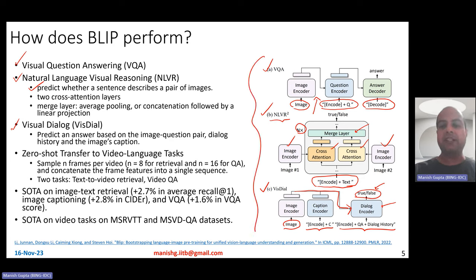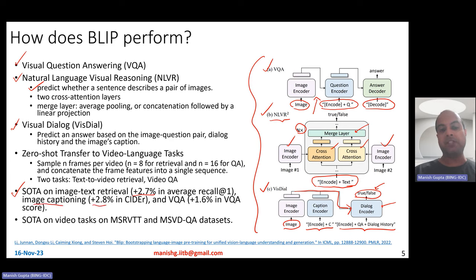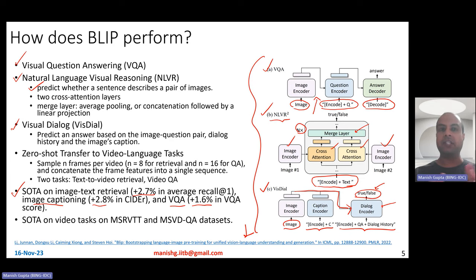They set up these fine-tunings appropriately depending on the task, and show state-of-the-art results on image-text retrieval, image captioning, and visual question answering. Although their model is designed for text and images, they also want to experiment with videos — specifically zero-shot learning for two video-language tasks.